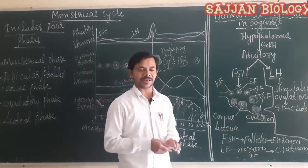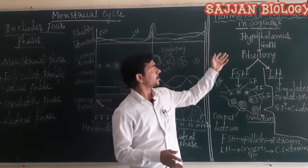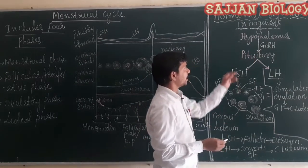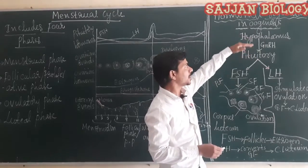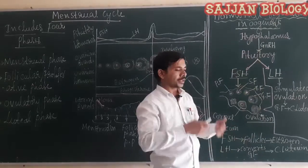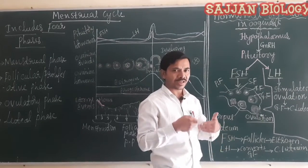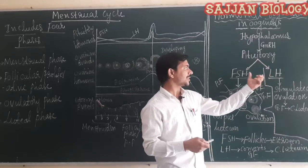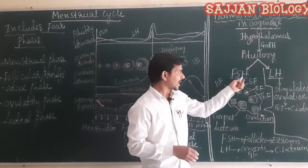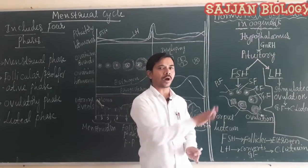Welcome back to Sajan Biology Classes. In today's class we are going to discuss hormonal regulation in oogenesis. The hypothalamus — as the name clearly indicates, it is located below the thalamus — when the level of gonadotropic releasing hormone increases, it acts on the pituitary gland to stimulate the secretion of gonadotropin hormones, which are FSH and LH. Both hormones together are called gonadotropin hormones.